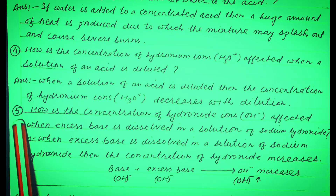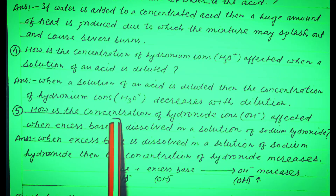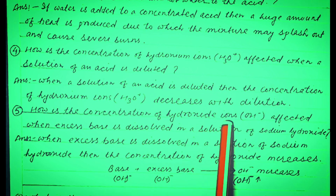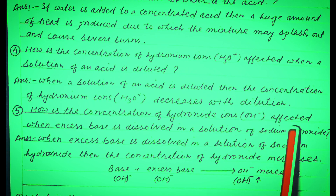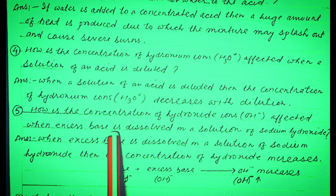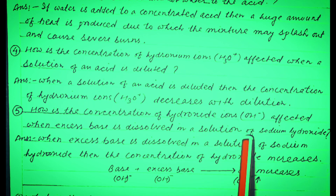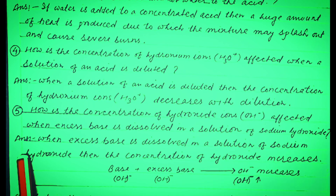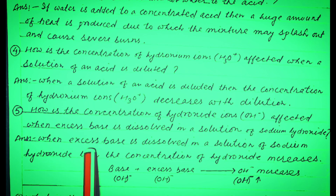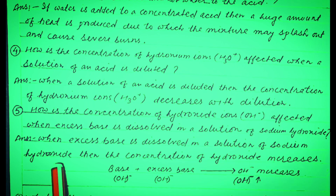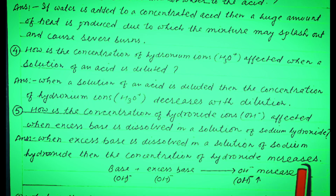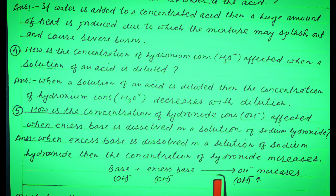Question No. 5: How is the concentration of hydroxide ions (OH⁻) affected when excess base is dissolved in a solution of sodium hydroxide? Answer: When excess base is dissolved in a solution of sodium hydroxide, then the concentration of hydroxide ions (OH⁻) increases.